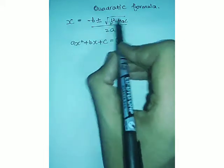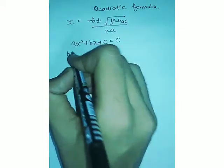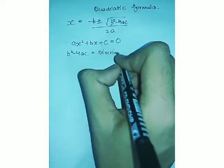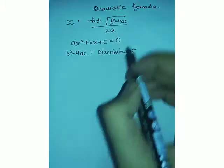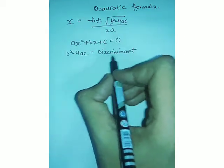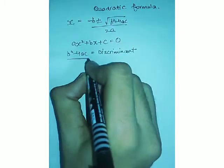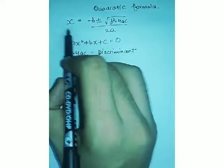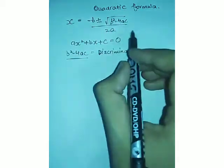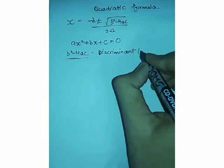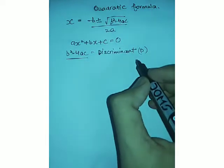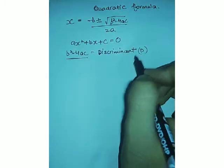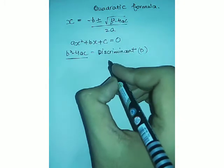This term under the root is also known as the discriminant. If in a problem you are asked to find only the discriminant, you only have to find b squared minus 4ac. If you are asked to find the roots, then you apply the full quadratic formula. Discriminant is also sometimes denoted as D. Sometimes only the discriminant is asked, and sometimes only the roots are asked.